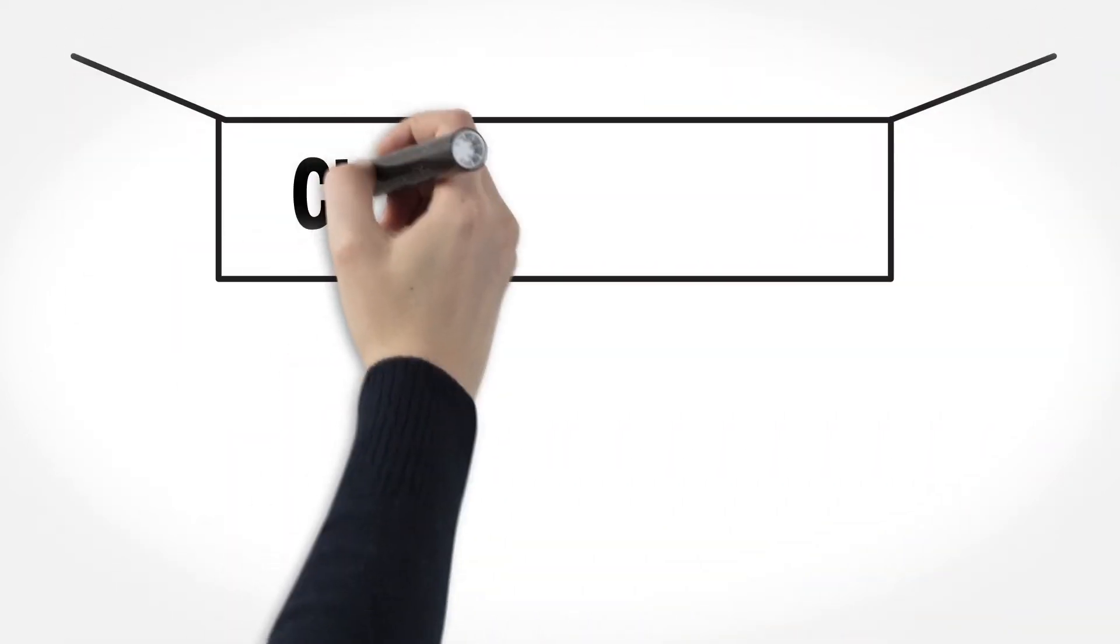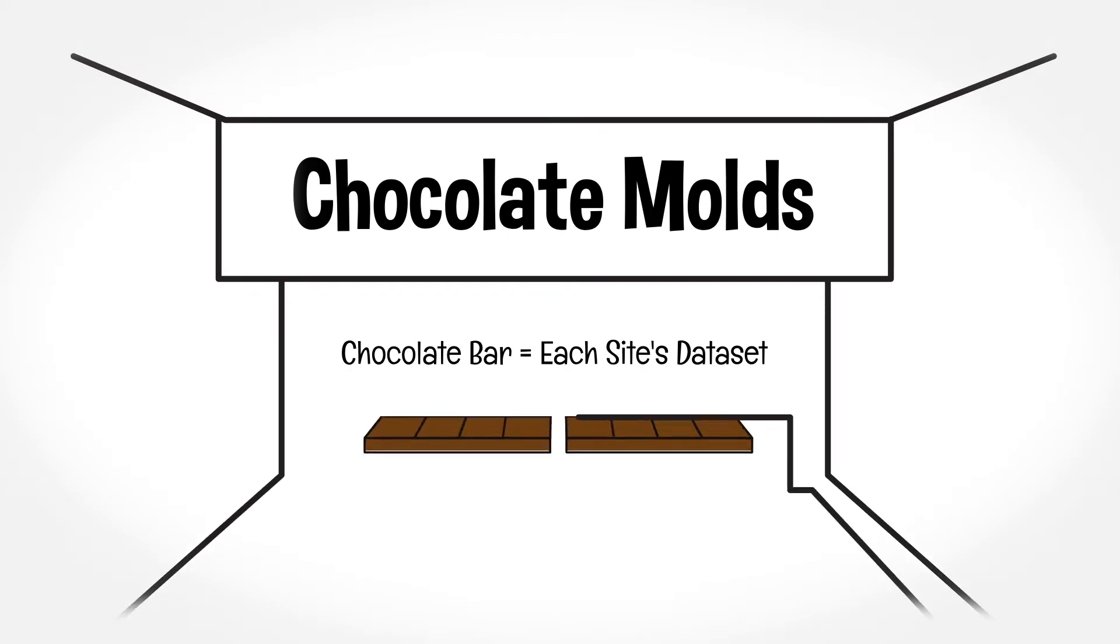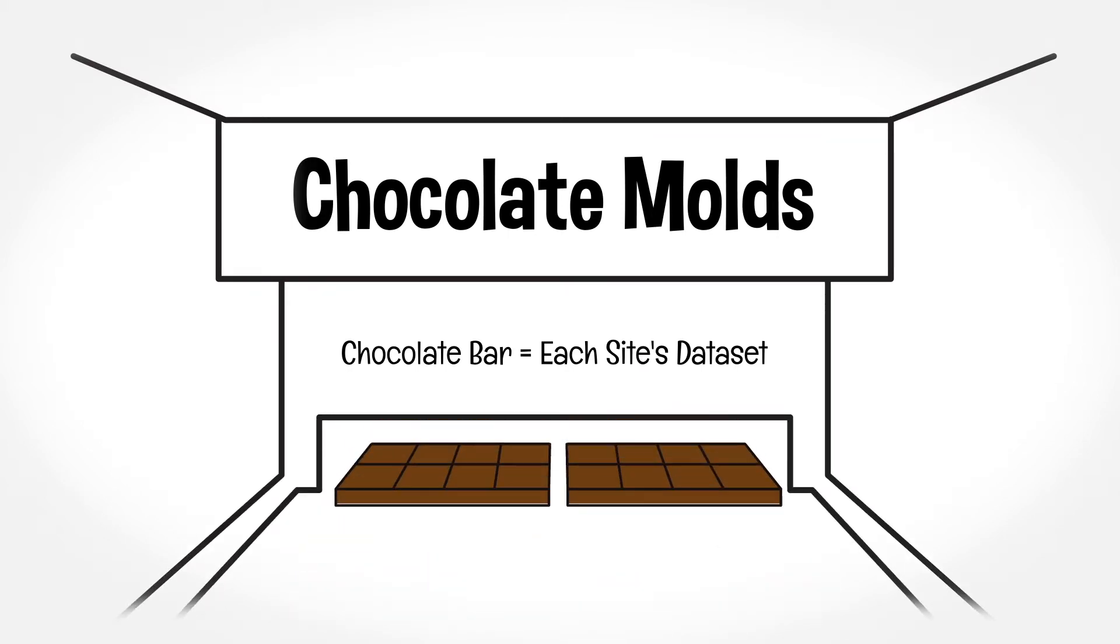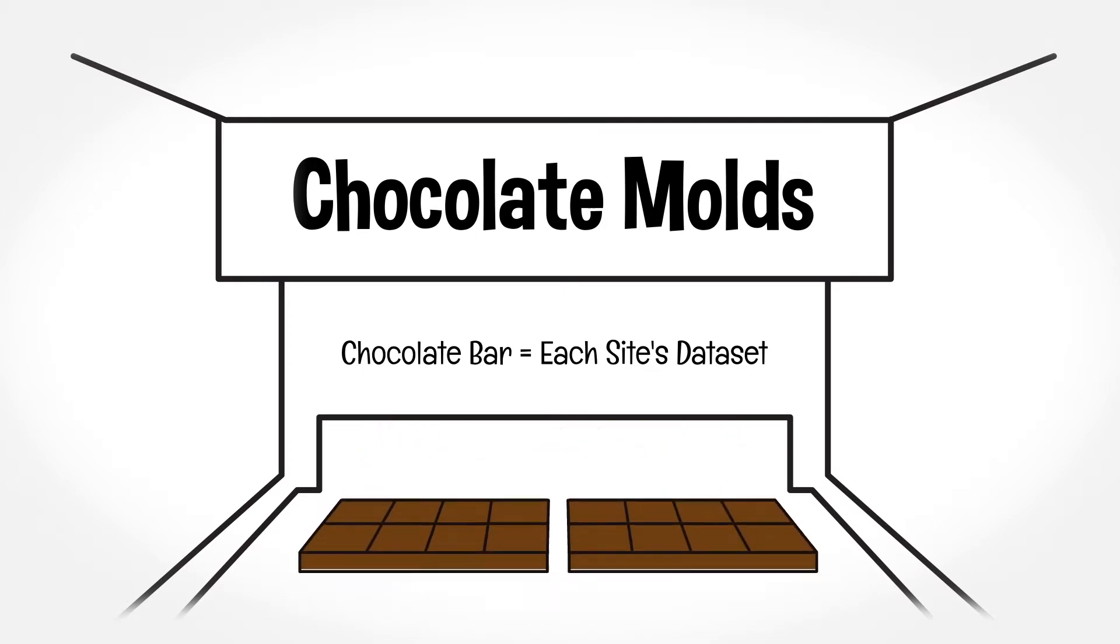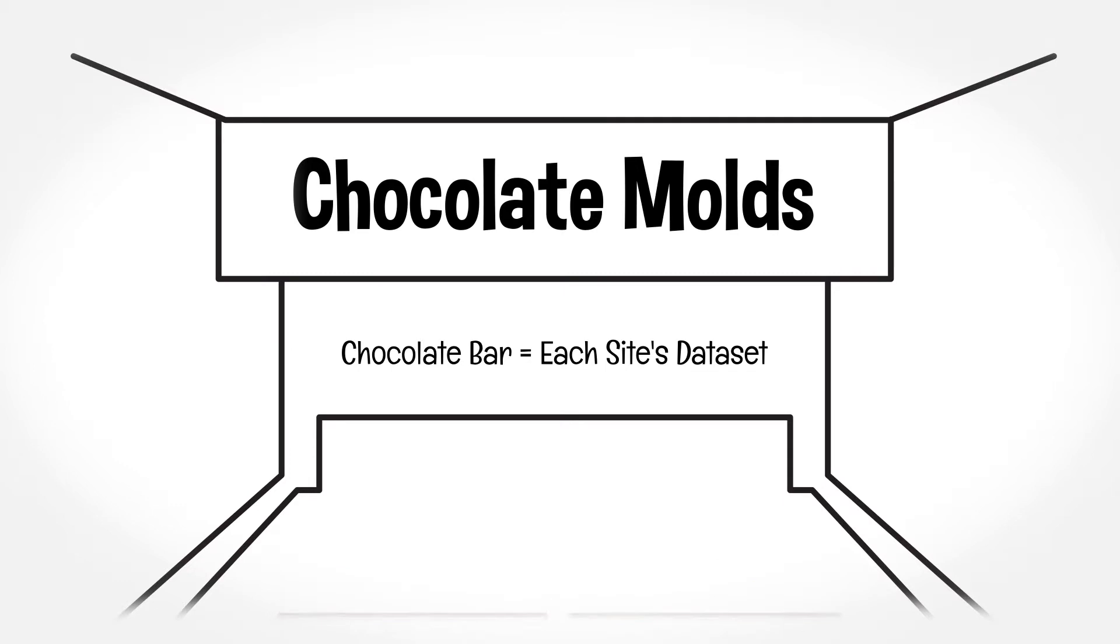Now the chocolate mixture is ready to be poured into molds. The chocolate bar itself represents each site's dataset that's ready for researchers to analyze so they can answer important questions. Air bubbles are removed when chocolate is poured into the molds, which is similar to how researchers clean up datasets to make sure they're complete and ready to study.